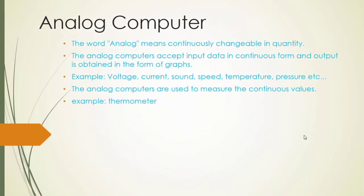Analog computer: The word 'analog' means continuously changeable in quantity. Analog computers accept input data in continuous form and output is obtained in the form of a graph. They are used to measure continuous values such as voltage, current, sound, speed, temperature, and pressure. An example of an analog computer is a thermometer.